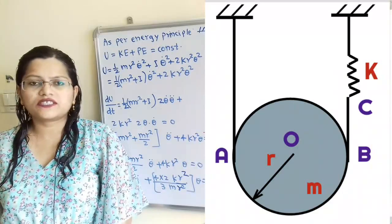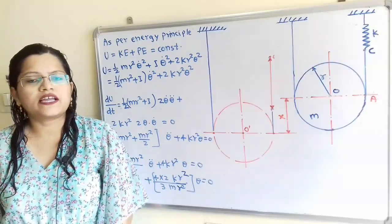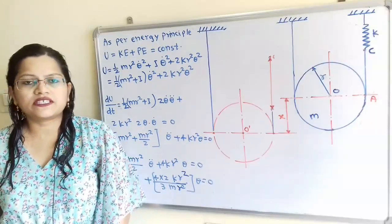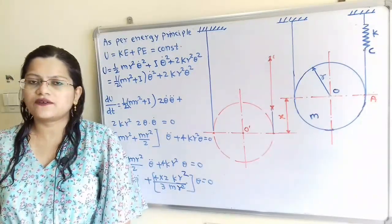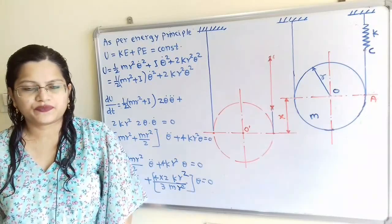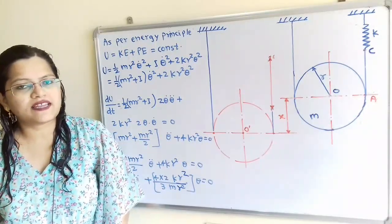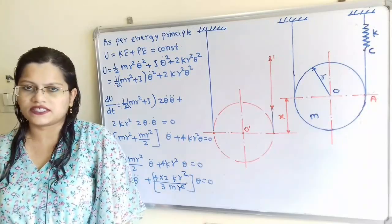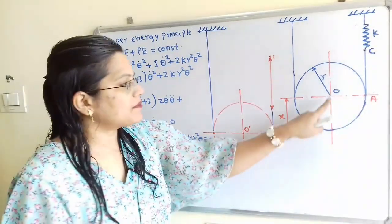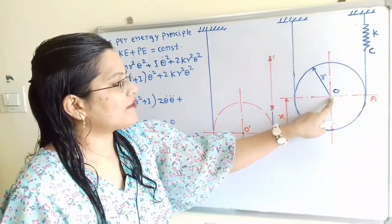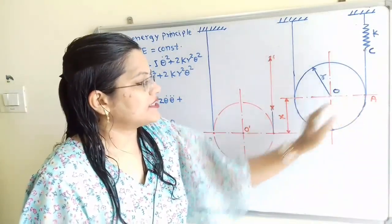We are going to solve this problem by using the energy method. Total energy U is equal to kinetic energy plus potential energy, which is equal to constant. We will first find out the kinetic energy as well as potential energy in the system. If we draw this diagram, here is the center O, and we will select one point on the circumference, that is A.